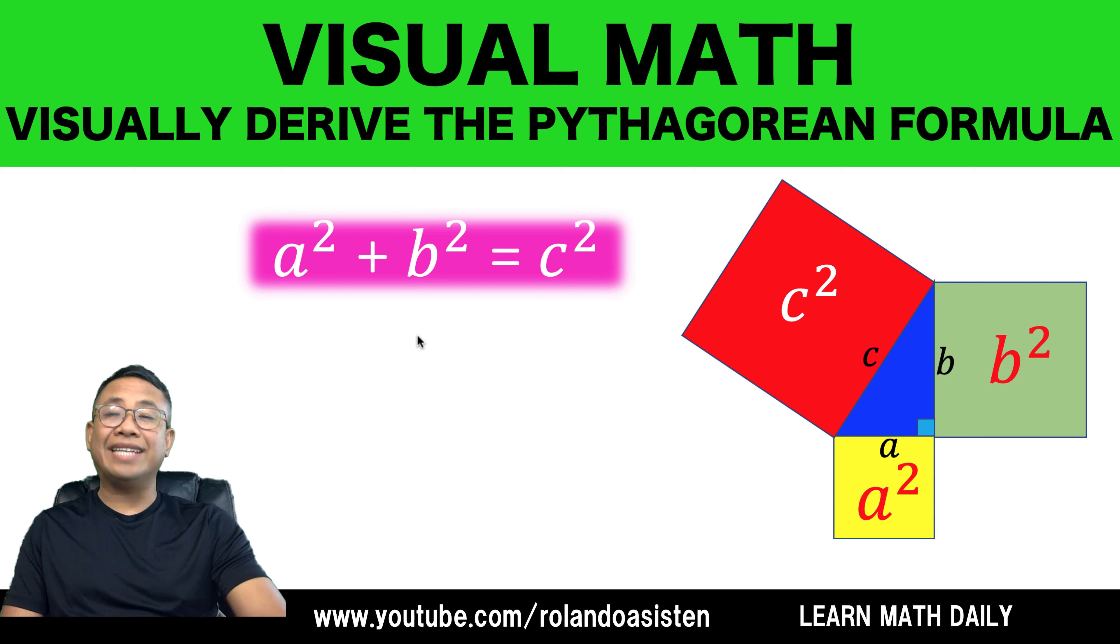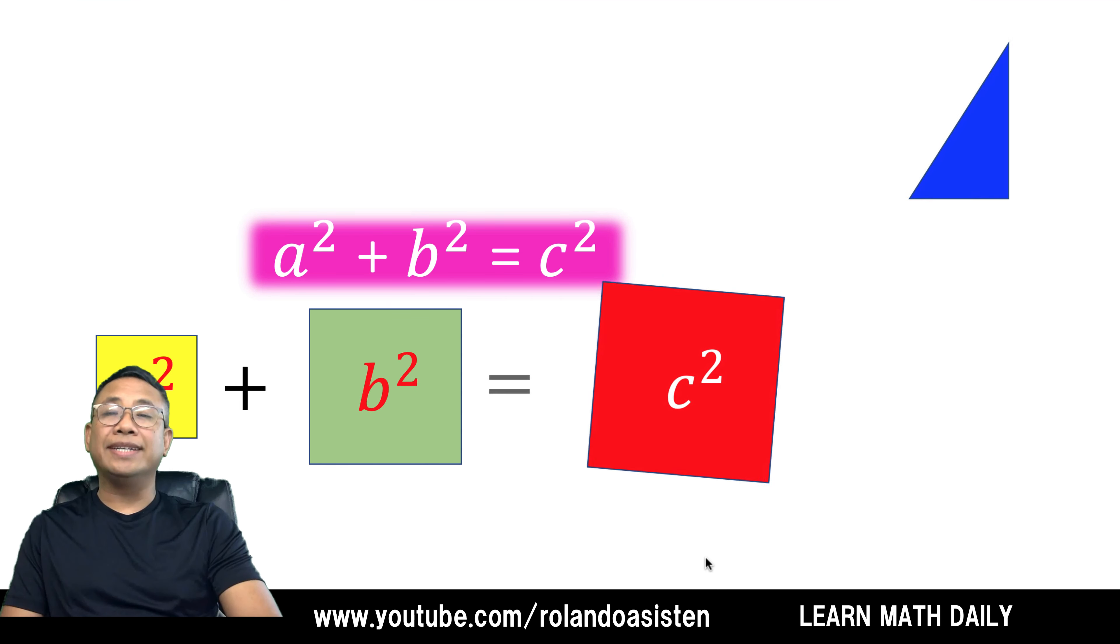The Pythagorean formula says that the sum of A squared plus B squared is equal to C squared. Visually, it looks like this. A squared plus B squared is equal to C squared.